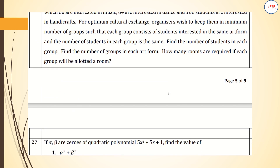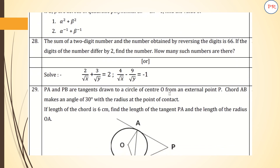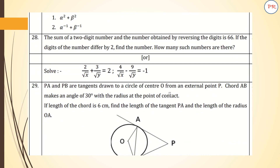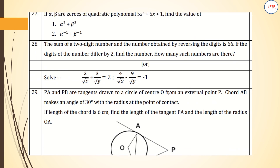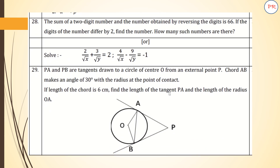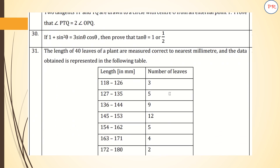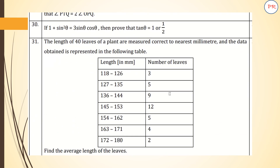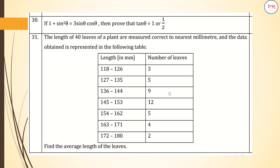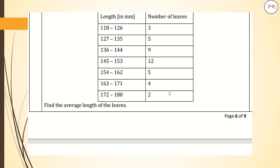Section C consists of six questions of three marks each. You can see the different questions given here, which will help you understand the difficulty level so that you can prepare. Question 28 has an OR option, question 29 also has an OR option. Question 30 again has trigonometry, and question 31 is from statistics.